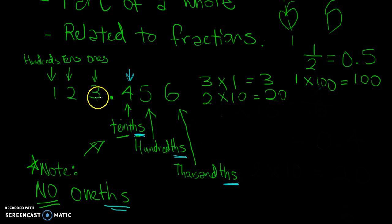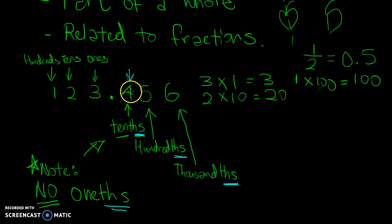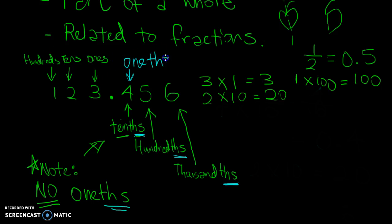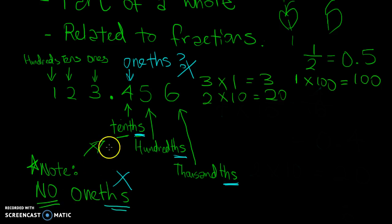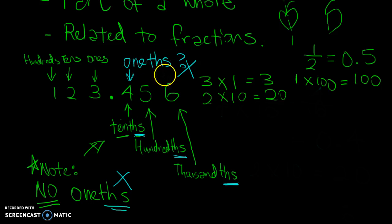On the left side of the decimal point, we always start with 1's, 10's, 100's. You might wonder why we don't start with 'oneths' on the right side. For now, just remember that there is no such thing as 'oneths.' I will explain later in the video why having 'oneths' does not make sense.